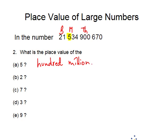The 2 is in that particular place, which within that set of 3 digits is in the tens position, so the place value is 10 billion.